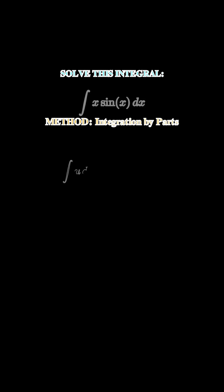Now this requires integration by parts using the formula integral udv equals uv minus integral vdu.